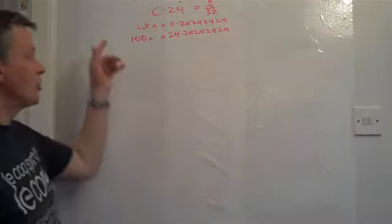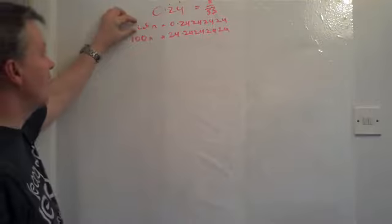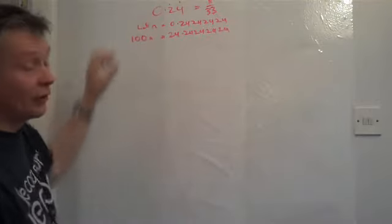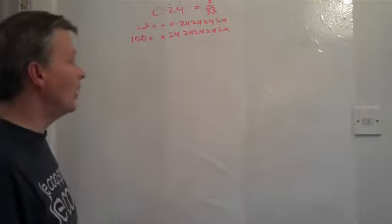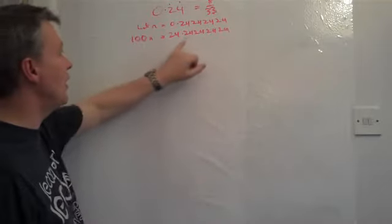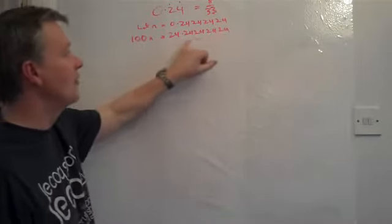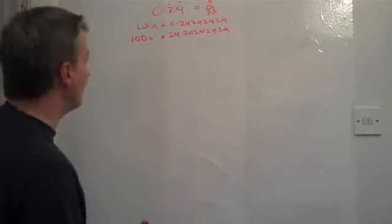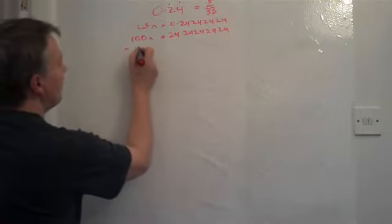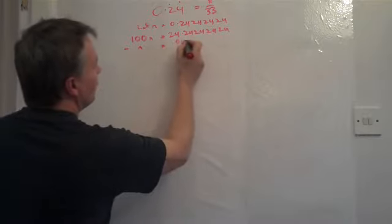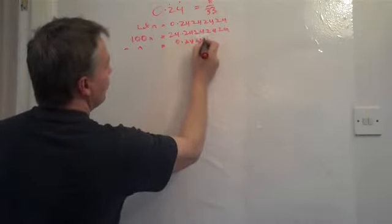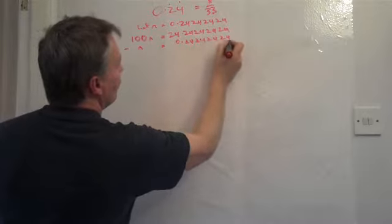Okay, so what I've got now is two values. I've got the value of N and I've got the value of 100N. So what I'm going to do is take one away from the other in order to isolate and get rid of this recurring part of it. So if I minus N, that equals 0.242424 and so on.